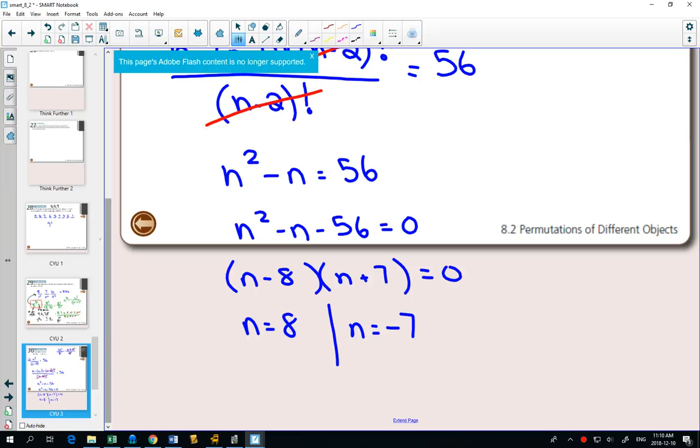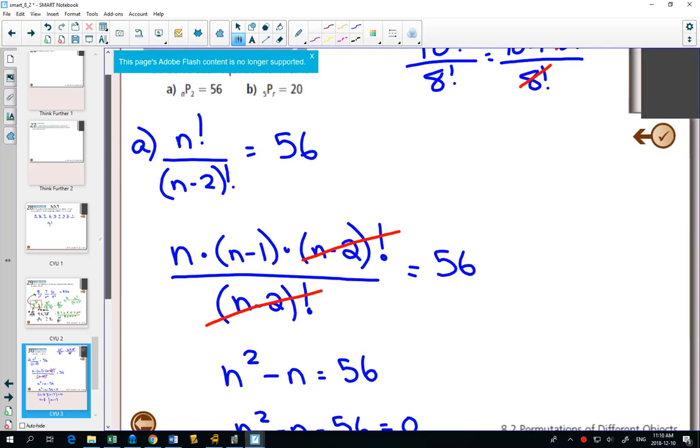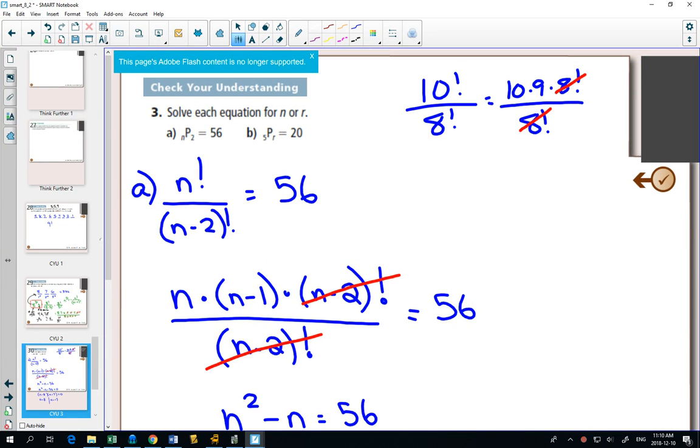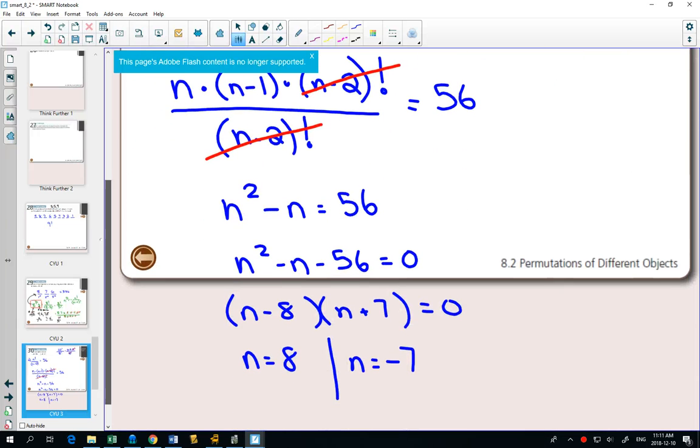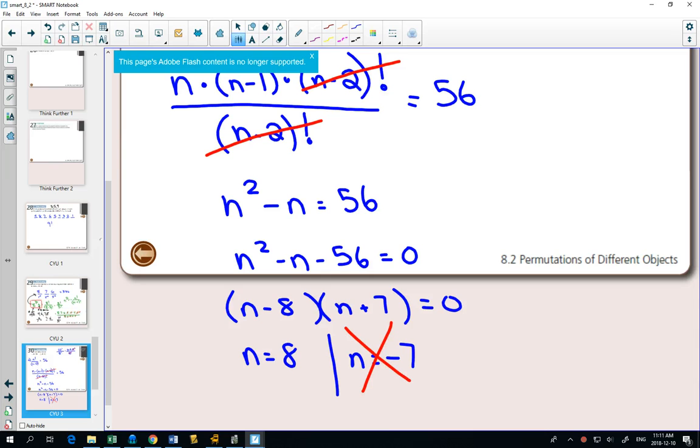Our definition of factorials and permutations. nP2 means n objects taken two at a time. Can you have negative 7 objects? Right? I went to the fridge to grab an apple and unfortunately there was negative 7 left. No. You can't have negative objects. You can't have negative factorials.